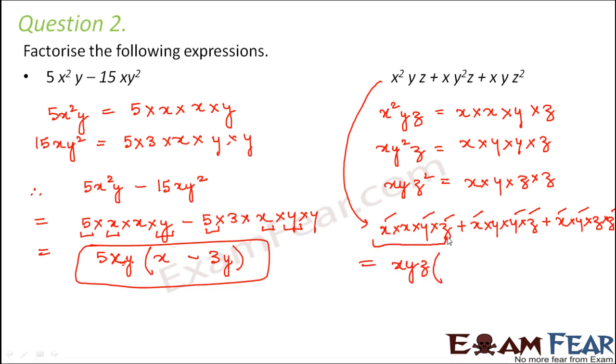In the first term we are left with x, in the second term we are left with y, and in the third term we are left with z. So this becomes xyz(x + y + z). This is the factor form of the given expression.